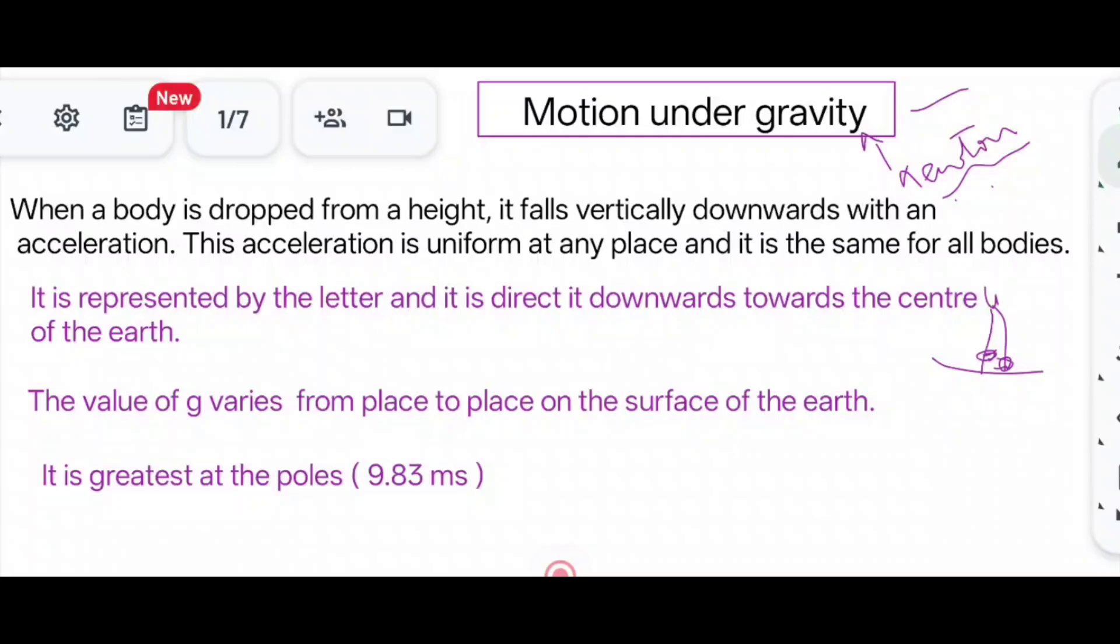It is represented by the letter G and it is directed downwards towards the center of the earth. The value of G varies from place to place on the surface of the earth. As you know, earth acts as a bar magnet, so the G value also varies from place to place. We have north pole and we have south pole.